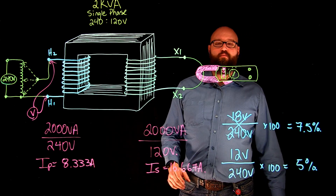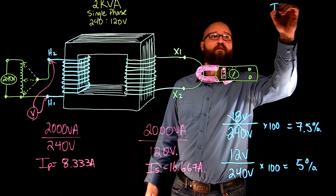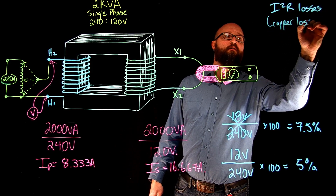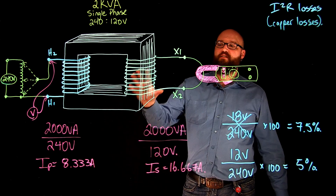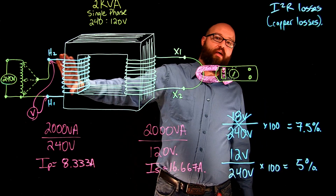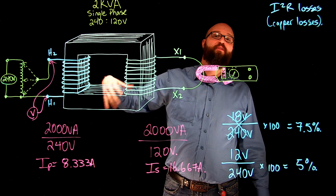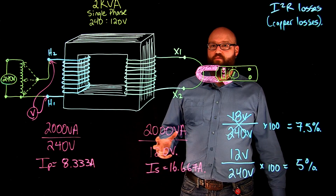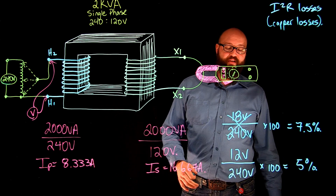One of the other things we can use this test for is to determine our I²R losses, otherwise known as copper losses, because the impedance of the transformer remains the same regardless of the applied voltage. If we have rated secondary current flowing, transformer action means we also have rated primary current. If a watt meter were connected into this circuit, it would be reading the copper losses of the transformer. Copper losses change as loading changes, whereas core losses do not — that's what we determined from the open circuit test in the previous video. Hopefully this has helped — thanks for joining me, see you next time, bye!